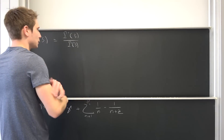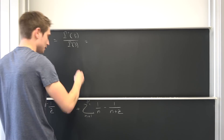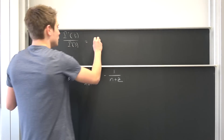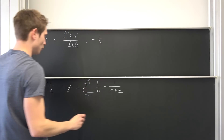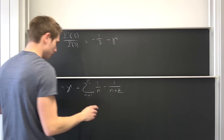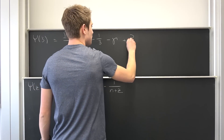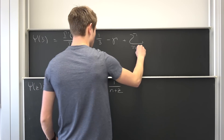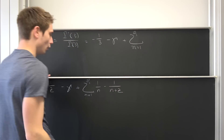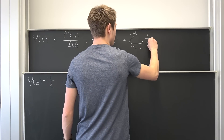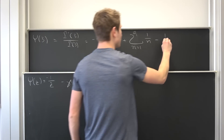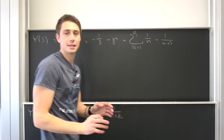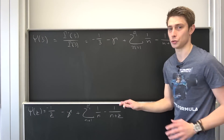We can do that. But what do we get on the other side? Well, if we take a look at this formula and plug in three everywhere, we get: minus one third, minus the Euler-Mascheroni constant, plus a sum running from n equals one to infinity of one over n minus one over n plus three.